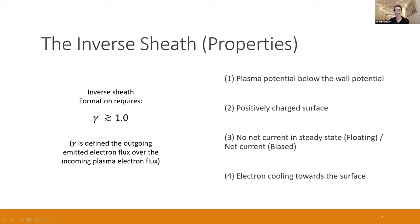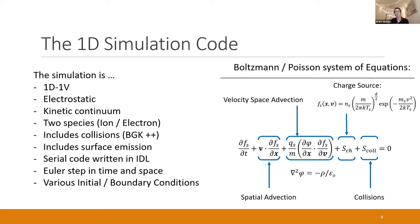An inverse sheath can form when gamma — defined as the outgoing emitted electron flux over the incoming plasma electron flux — is greater than or equal to about one. The plasma potential in the inverse sheath can be below the wall potential, both in the biased and floating cases. You end up with a positively charged surface, no net current in steady state for the floating case, and electron cooling up to the surface.